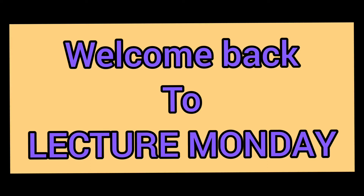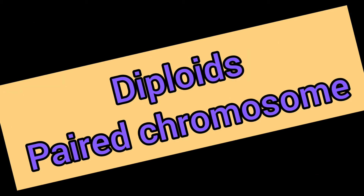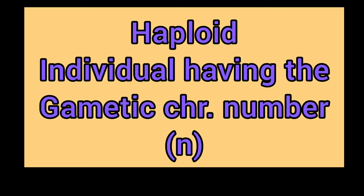Welcome back to my channel. Today is Monday and we are here with Lecture Monday. We know that we are diploid organisms, meaning we have paired chromosomes — one from each parent. Today we will talk about haploids and their classification. An individual having the gametic chromosome number n is known as a haploid.